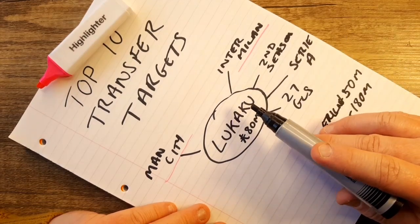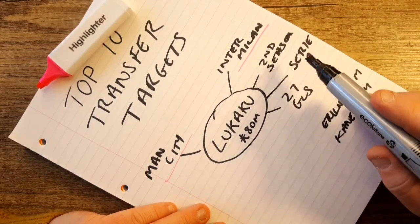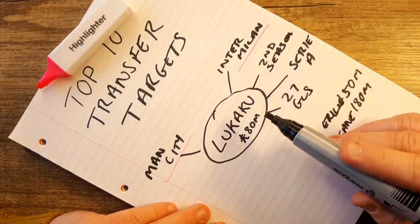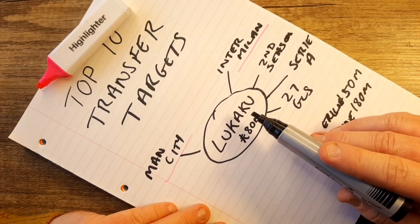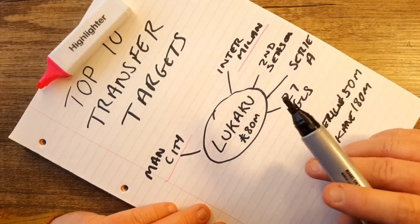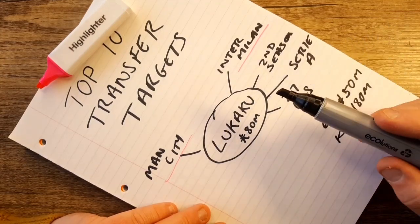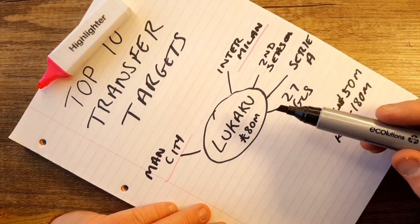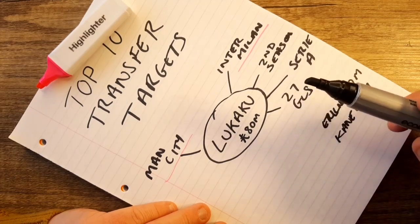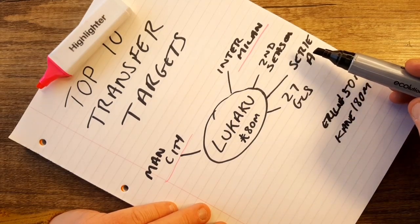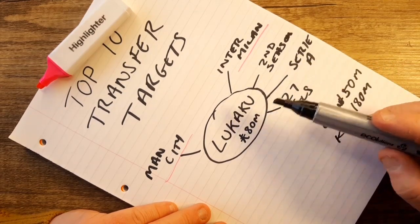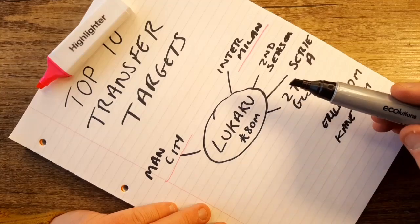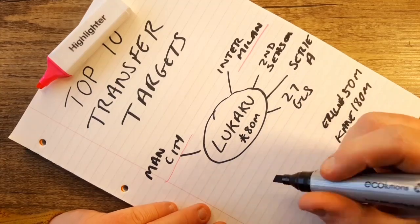Would Lukaku be a cheaper signing than those two? Well, with Inter winning Serie A, his value to Inter Milan doubles. If Inter finish fourth this season, I think Lukaku's worth maybe 80 to 100 million. With them winning the first Serie A title in years and years, I think Lukaku's value is now 200 million.